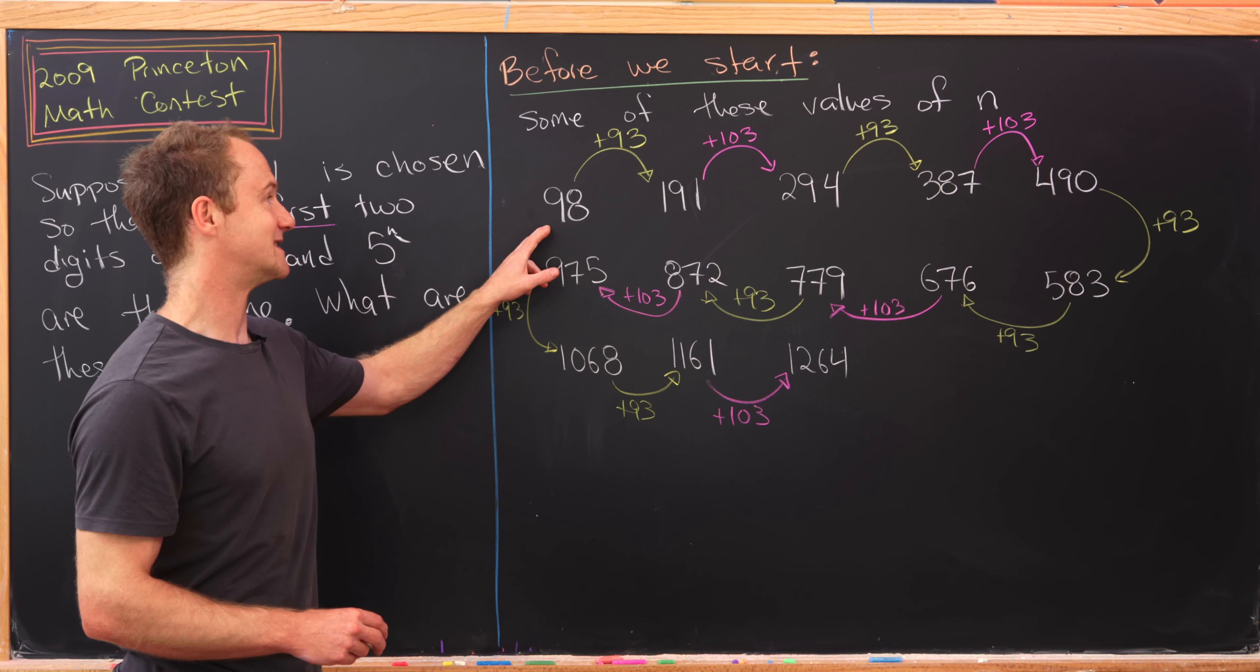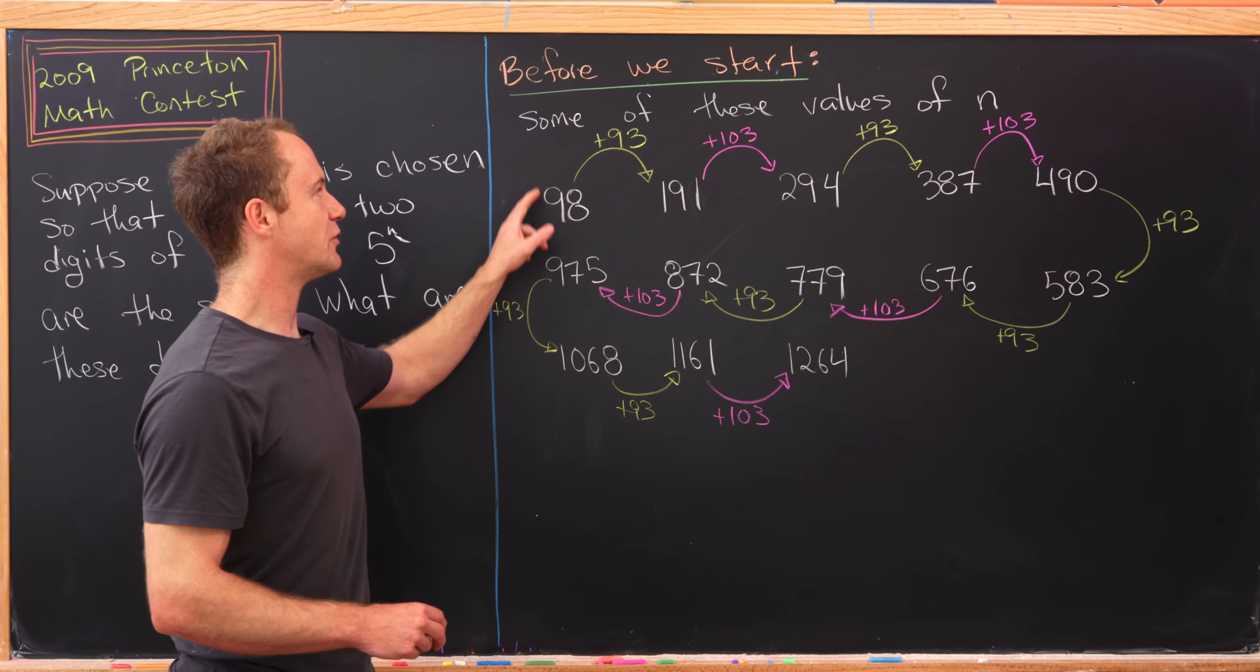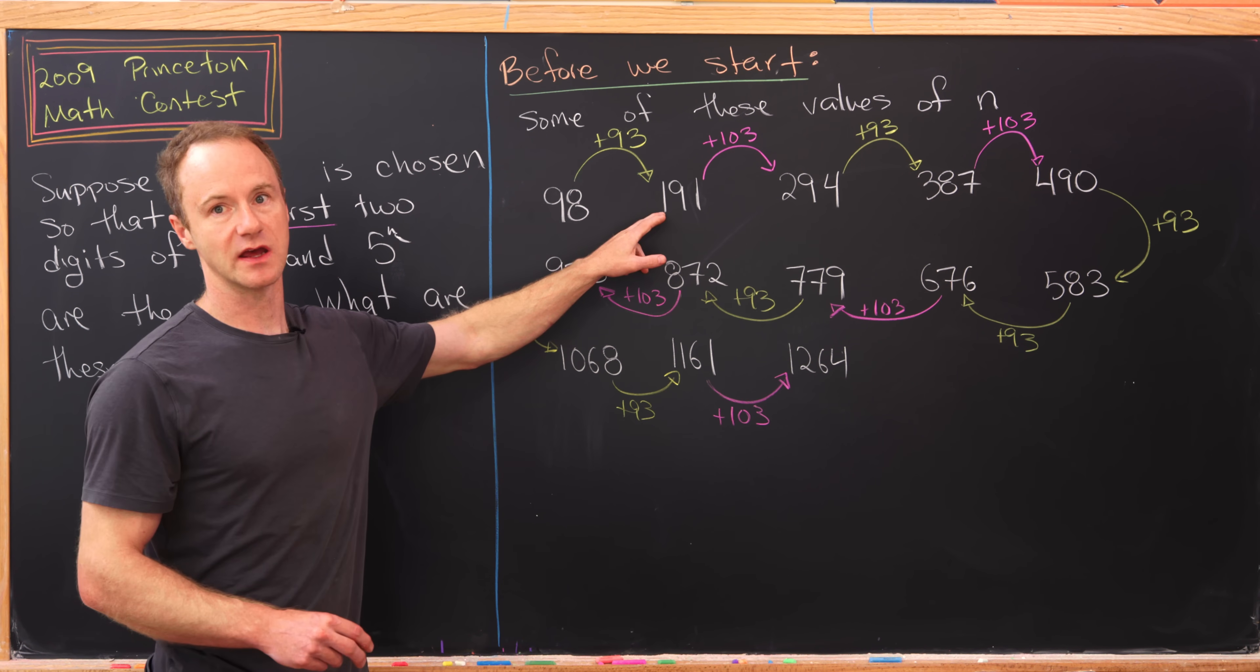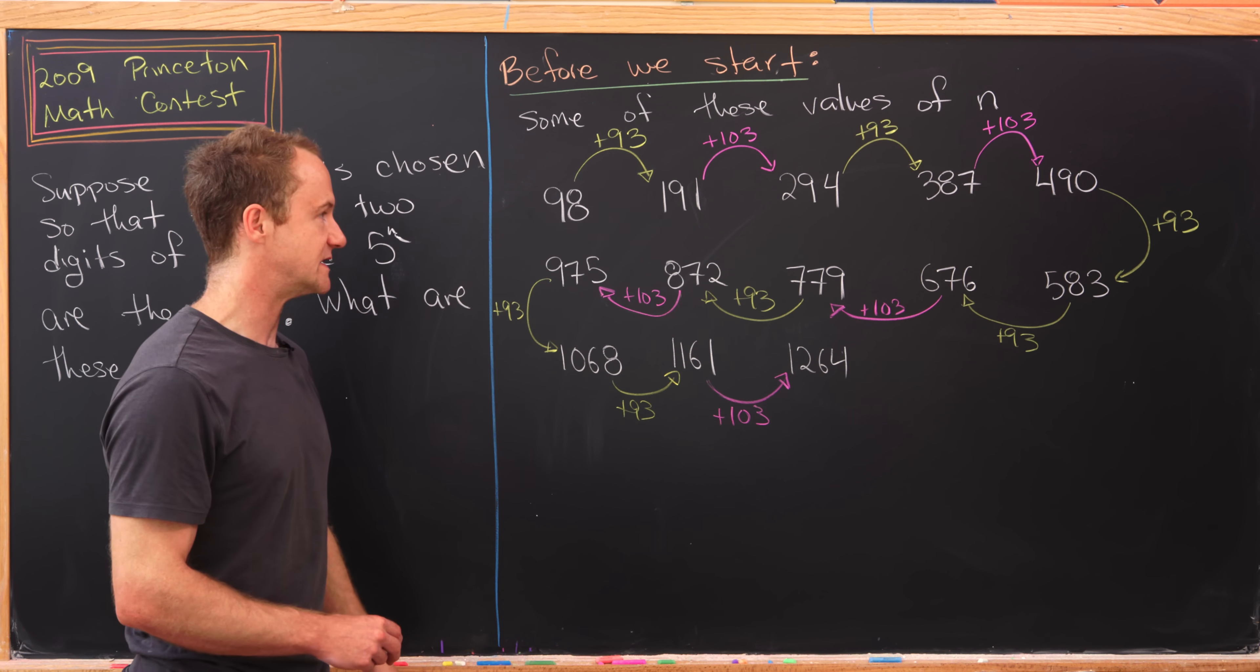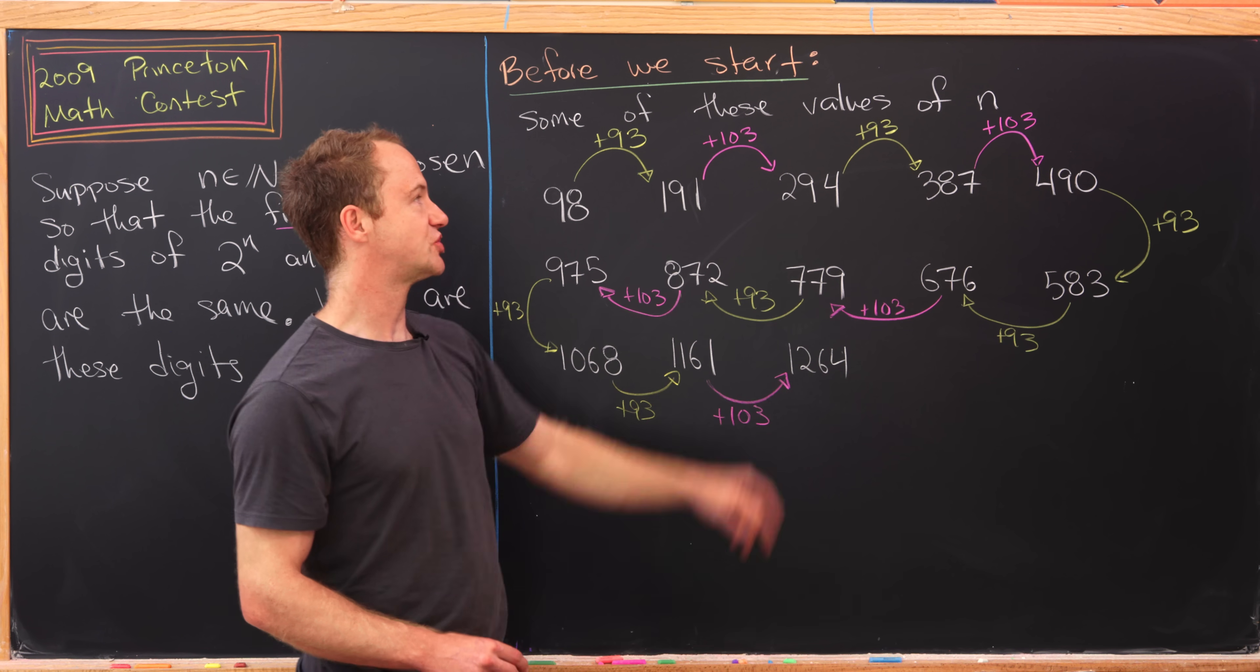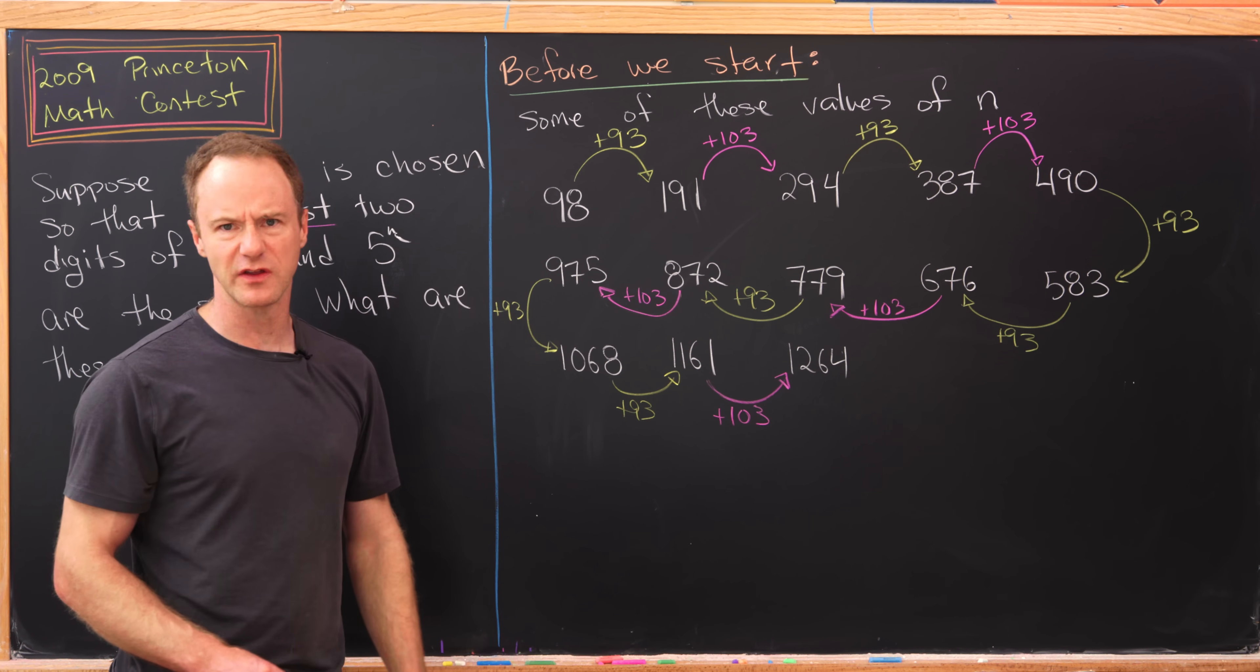The first number where this occurs is 98. If you add 93 to that you get the next number, which is 191. Then the next is 294, which is 103 away.